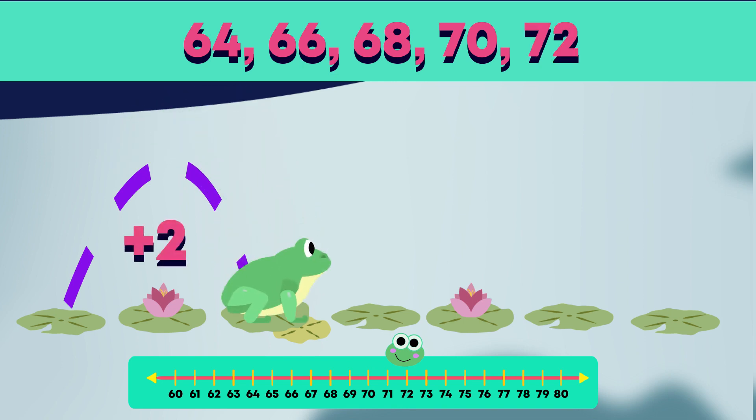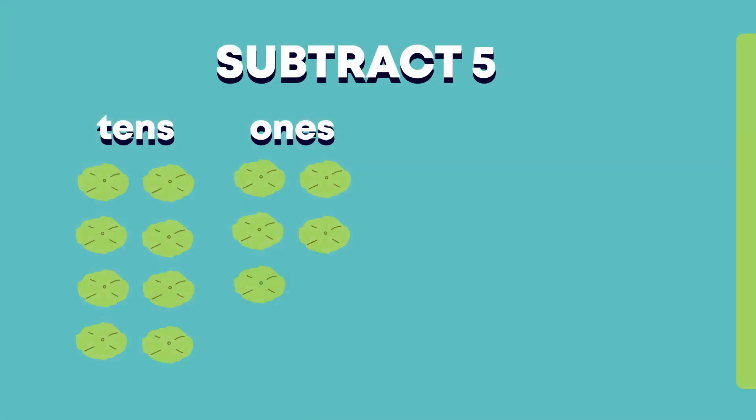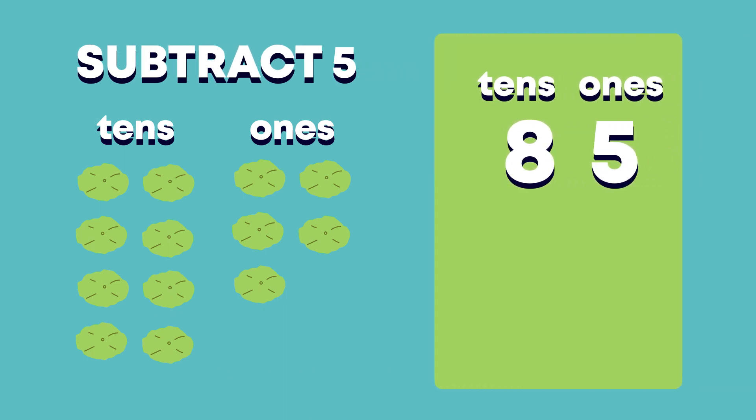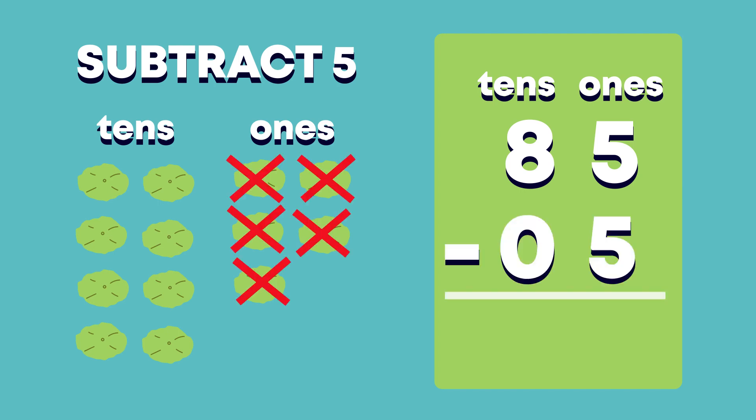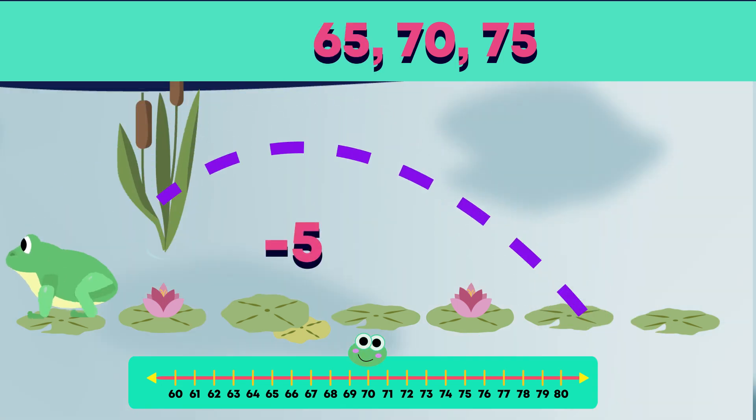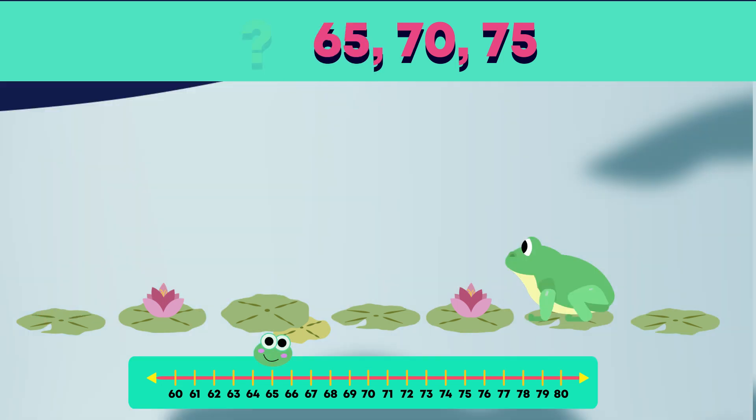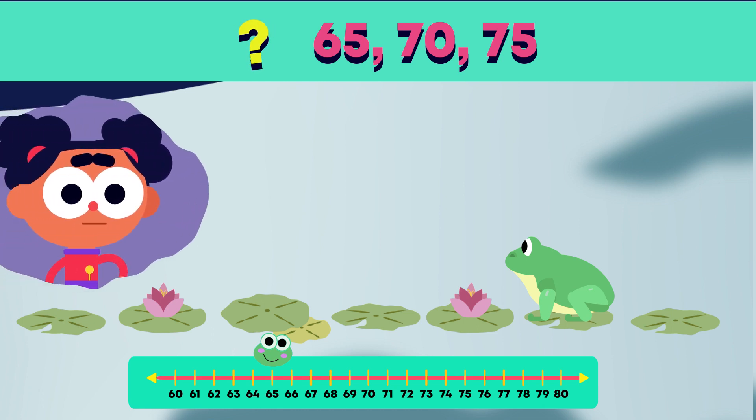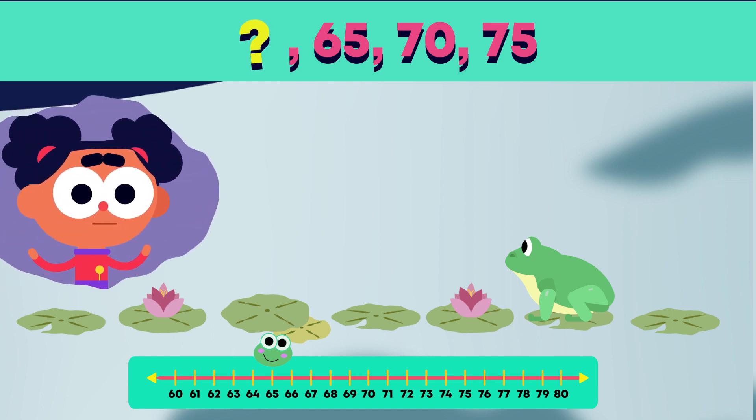When we count backwards in 2s, 3s or 5s, we need to subtract or take away the number we are counting in each time. Let's see how. To count back in 5s, we will subtract 5 ones like this. 85 minus 5 is 80. Now, count backwards with me. 75, 70, 65. If this frog hops back 5 one more time, where will it land? 60. Well done!